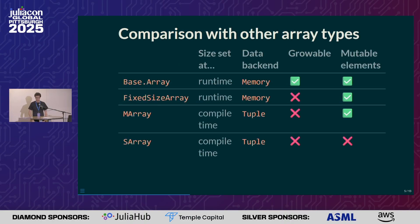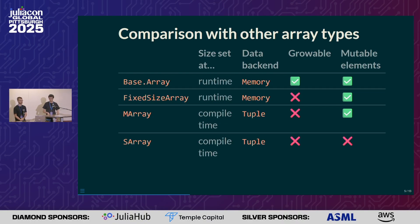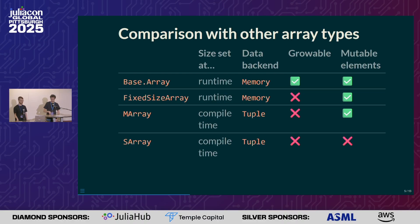This is a comparison with other array types in the ecosystem. There is Base.Array, which has the size set at runtime, the data backend is memory, and it's both growable and the elements can be mutated. In the fixed-size array we created, the size can also be set at runtime and is backed by memory, but it's not growable — you cannot change the size — though elements can be changed. Also very popular are the MArray and SArray from StaticArrays.jl, but they both have their size set at compile time. The data backend is a tuple instead of memory. They are not growable, but the SArray also cannot mutate the elements.